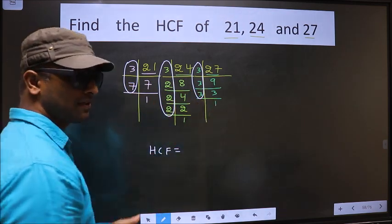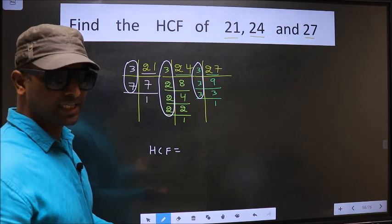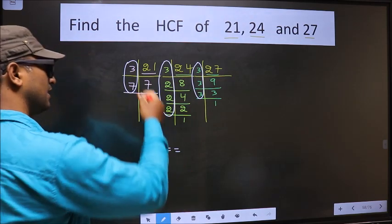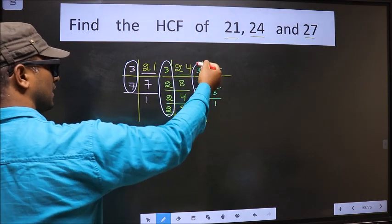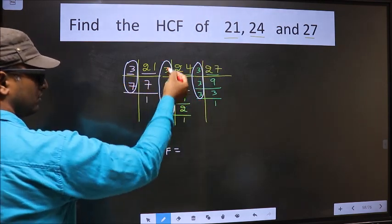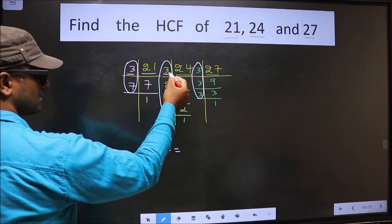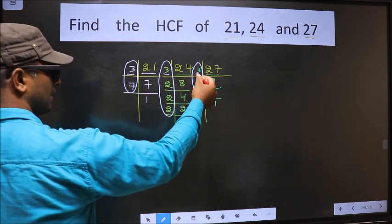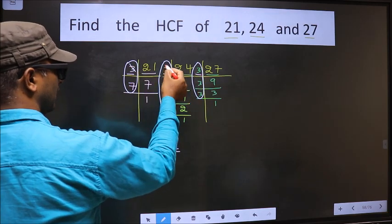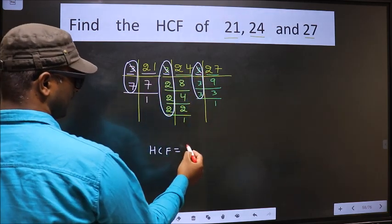So now let us find the numbers which are present here, here and also here. Starting with the number 3. Do we have 3 here? Yes. So go to the next place. Do we have 3 here? Yes. So you cut 3 right here.